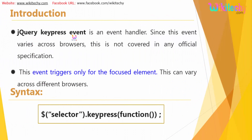jQuery keypress event is an event handler. Since this event varies across browsers, it fires only on the focused element and can vary across different browsers. Here is the syntax: you need to identify an HTML element and call the .keypress() function. Automatically the keypress function will be triggered.